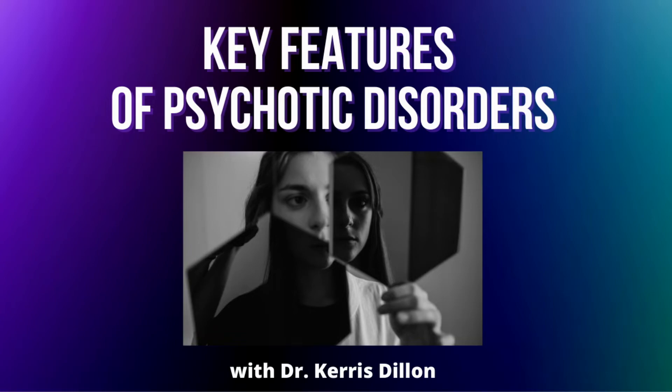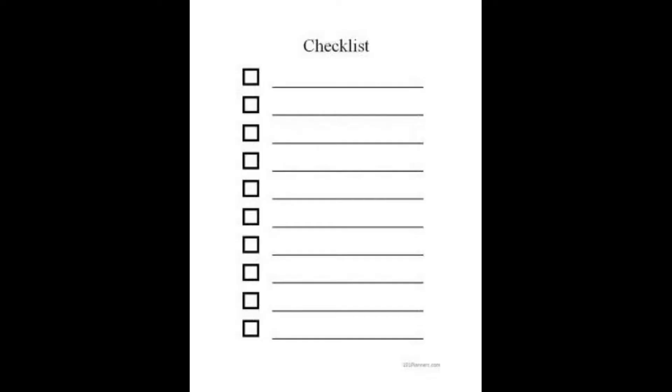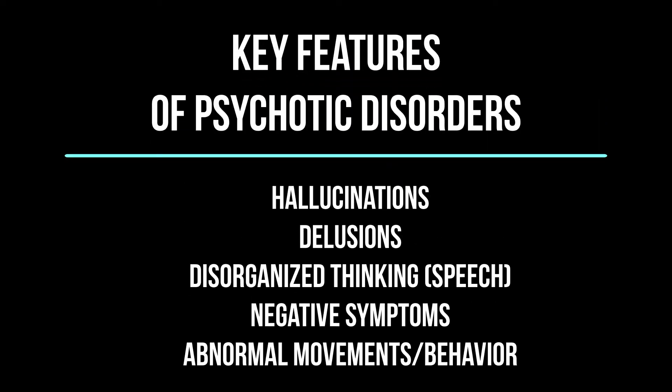As we begin talking about psychotic disorders, there are some defining features or signs and symptoms that make them part of this category. These key features are hallucinations, delusions, disorganized thinking and speech, negative symptoms, and abnormal behavior or movement, also called motor behavior.